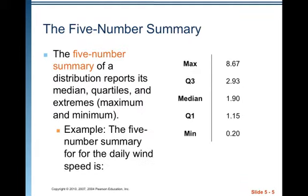The five-number summary of a distribution reports its median, quartiles, and extremes, the maximum and minimum. For example, the five-number summary for the daily wind speed is: the maximum of 8.67, that's the value we think might be an outlier. The third quartile is 2.93, the median is 1.90, the first quartile is 1.15, and the minimum is 0.20.